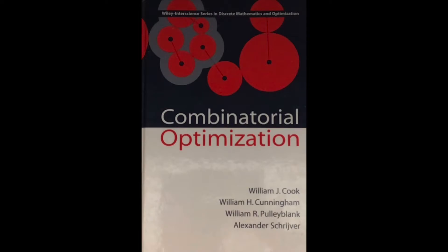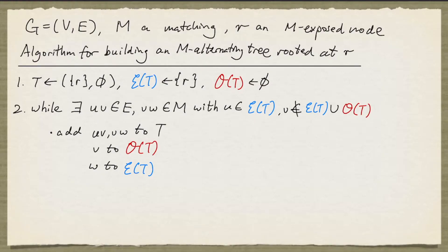We'll see how we can find M-augmenting paths using M-alternating trees. We're going to follow quite closely the methods described in this book by Cooke, Cunningham, Pulleyblank, and Scriver. So we have a graph G and a matching M that is not perfect, and we pick an M-exposed node and call it R.